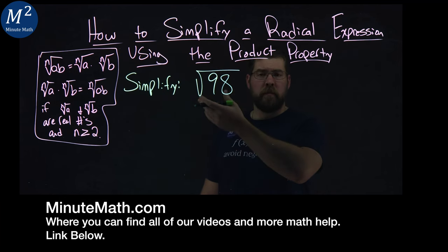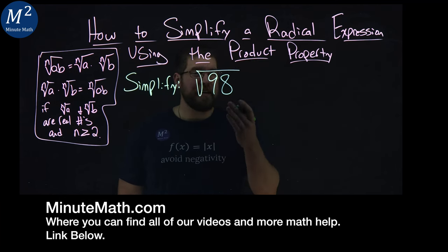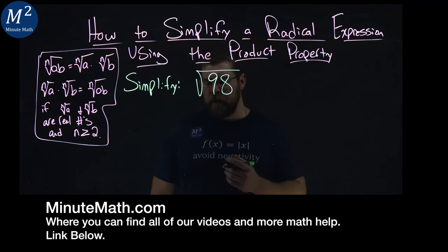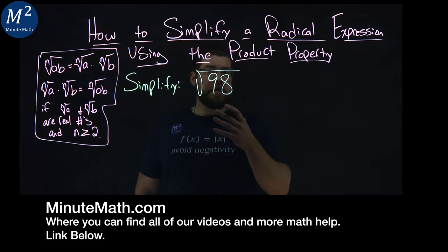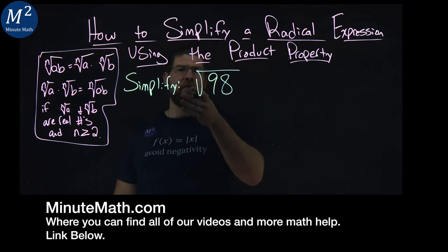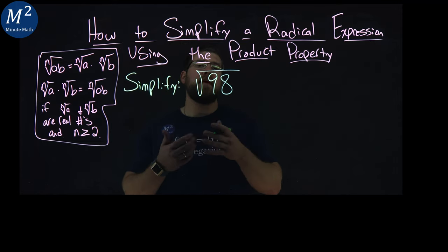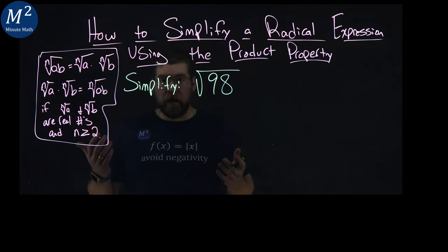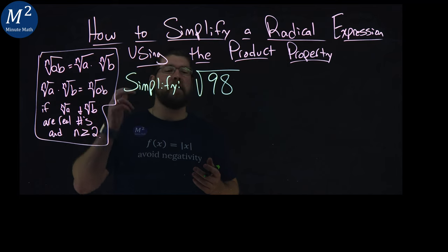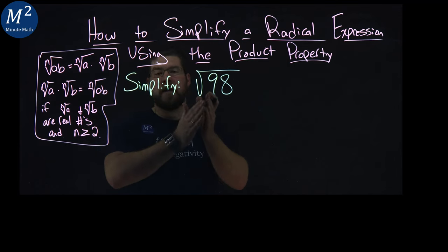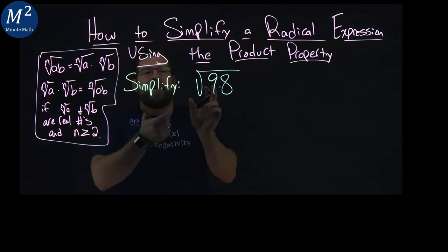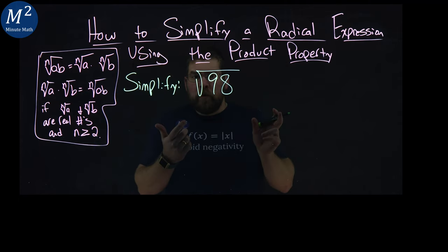We're given this problem here: simplify the square root of 98. The product property basically tells us that if we have a square root or an nth root of a number, we can split up that number into products—a times b instead of ab together. Then we can split up and take the square root separately.